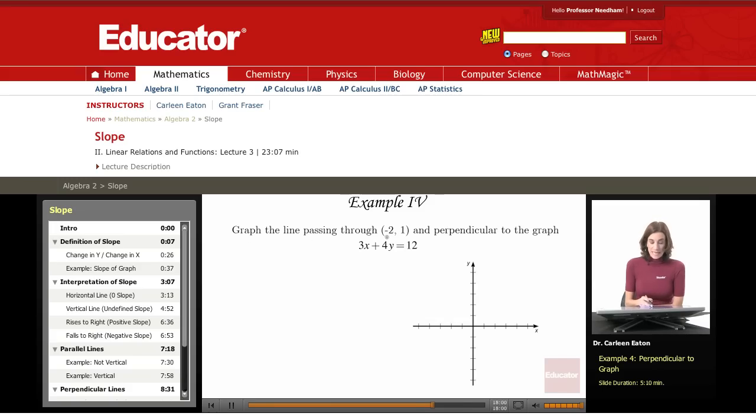Graph the line passing through the point negative 2, 1 and perpendicular to the graph of this equation: 3x plus 4y equals 12.